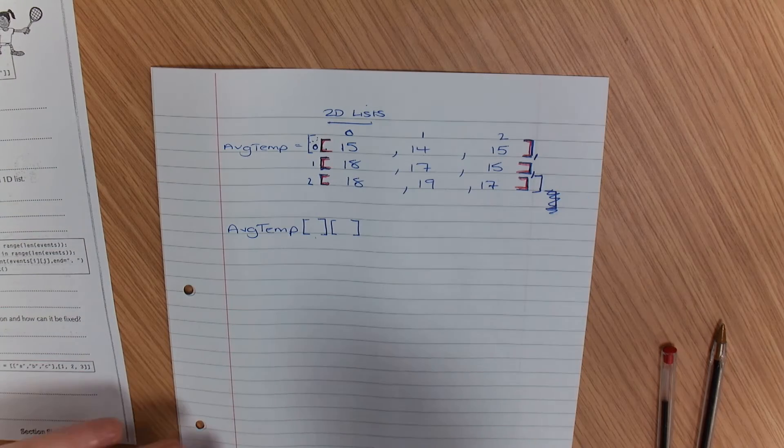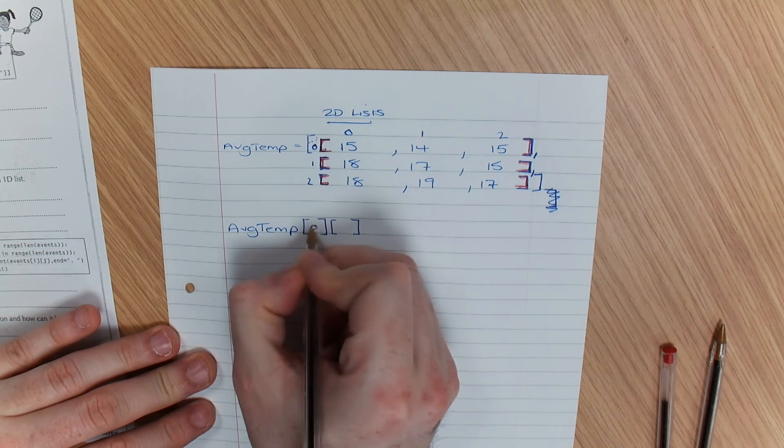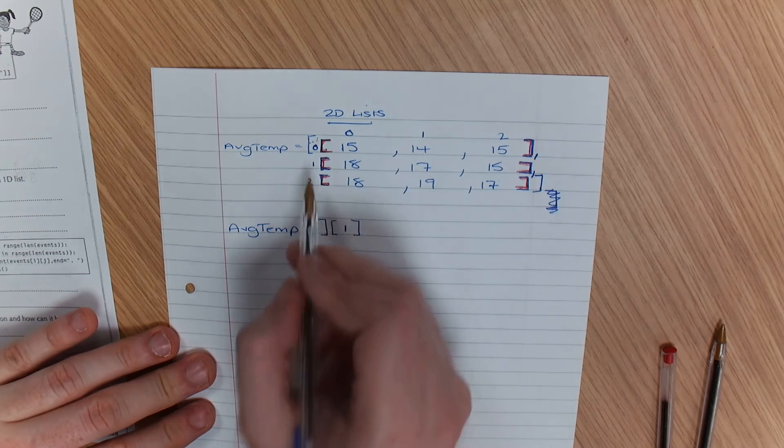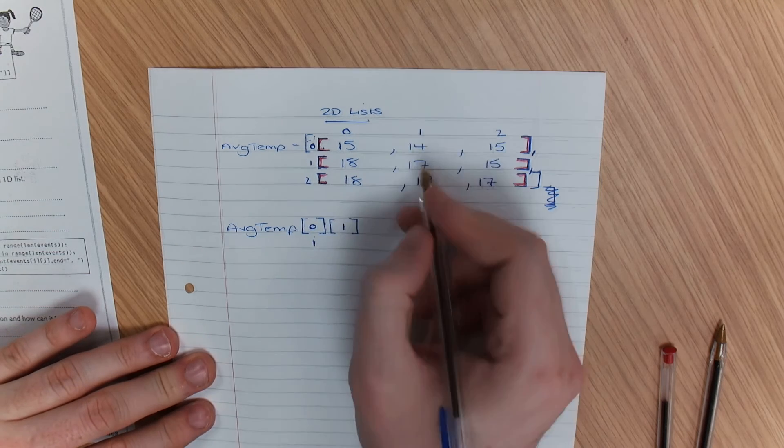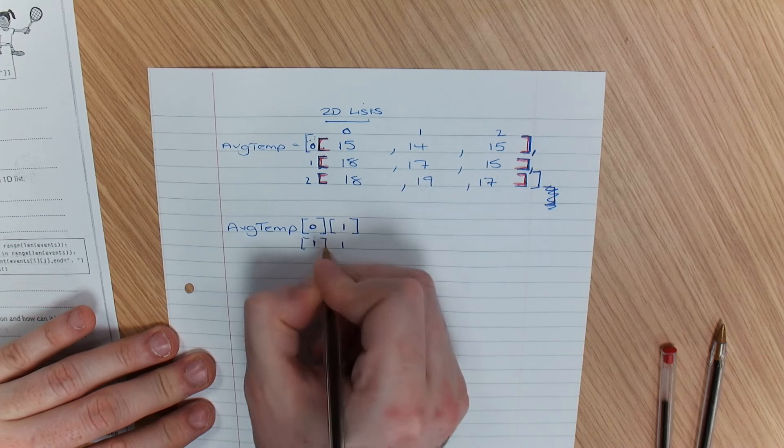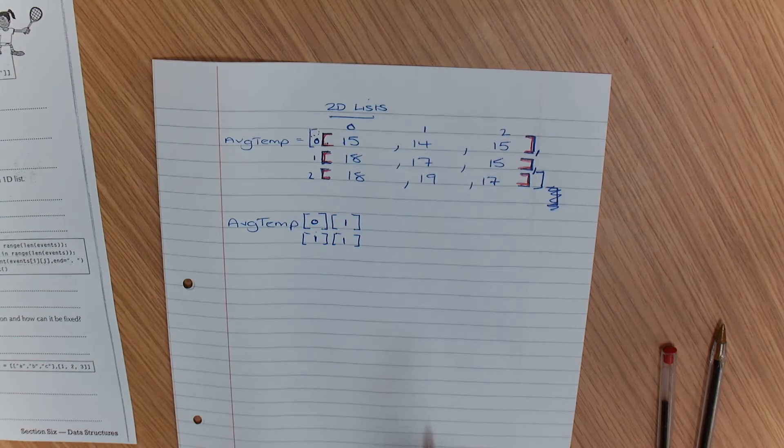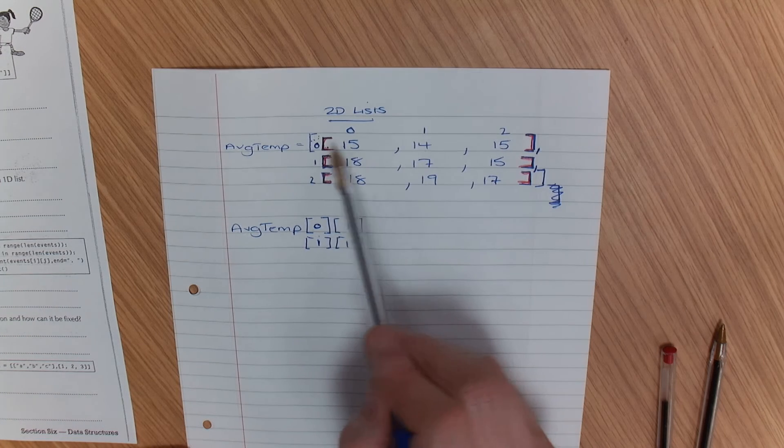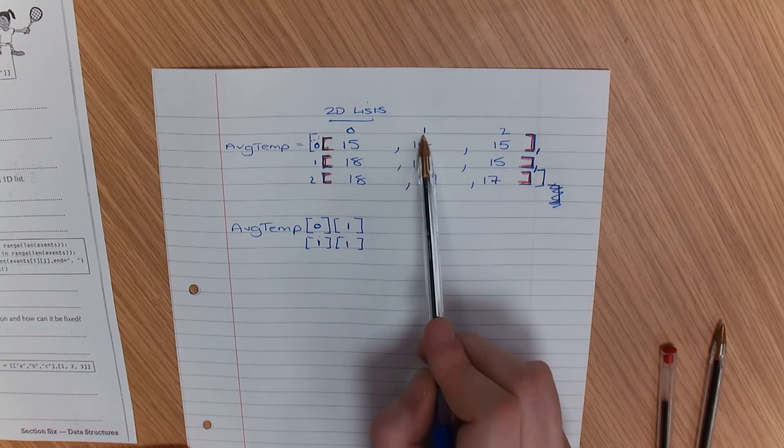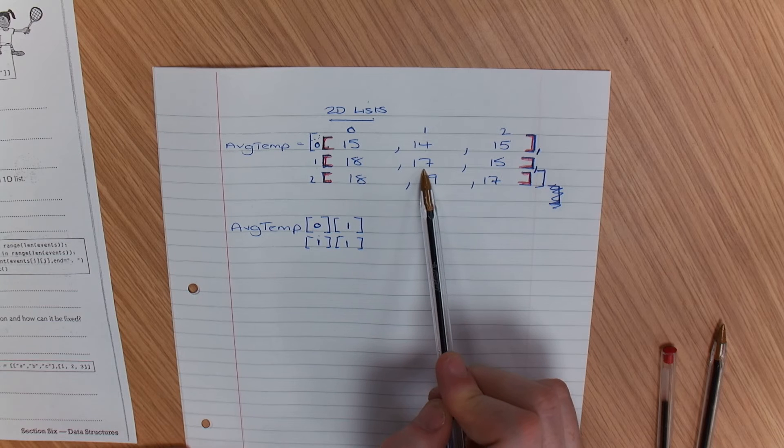So if I needed the value 14, I'm going to go to row 0, position 1. If I needed the value 17, I would go to row 1, position 1. That's how you write them.